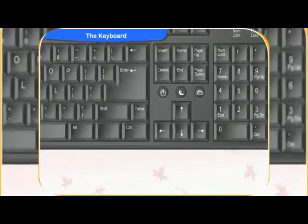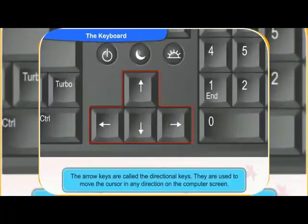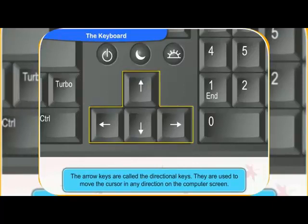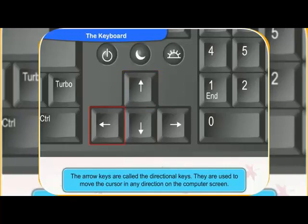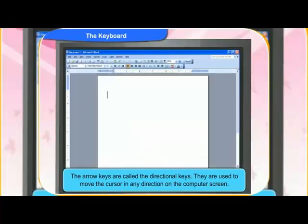What are these arrow keys for, Clico? The arrow keys are called the directional keys to point to direction — up, down, left and right. They are used to move the cursor in any direction on the computer screen.